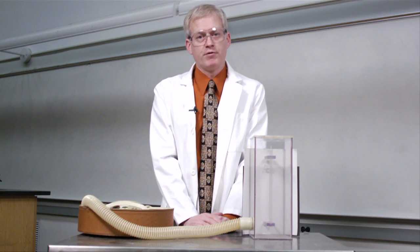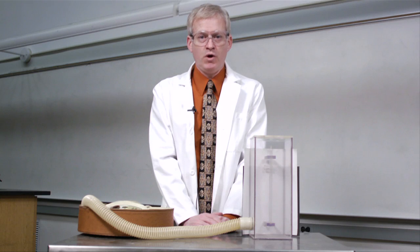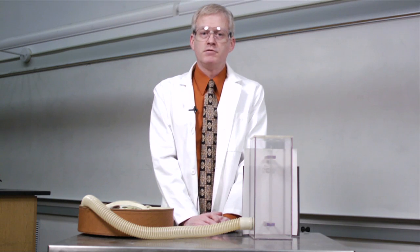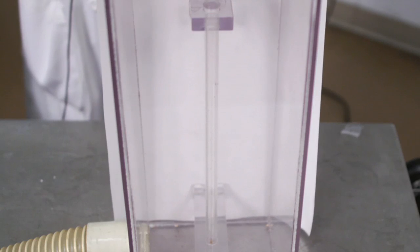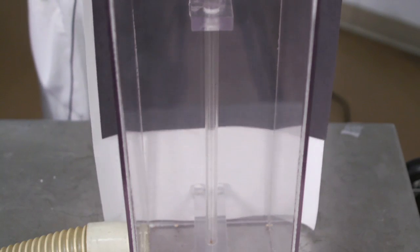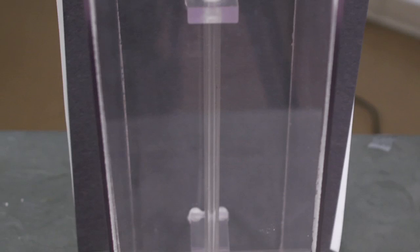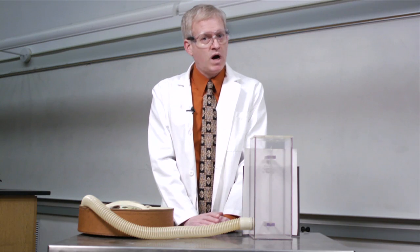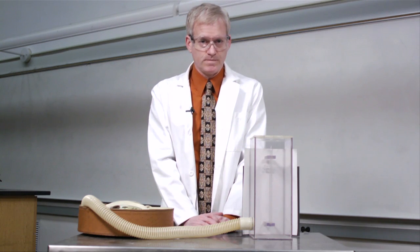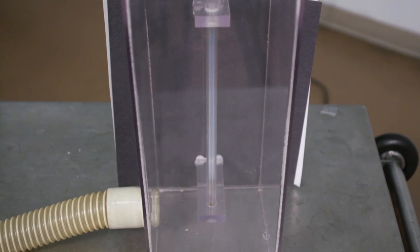An interesting thing about the critical point is that as it is approached from above in temperature, one often observes a phenomenon known as opalescence. The condensation of gas to liquid that occurs everywhere in the tube leads to very small suspended drops that scatter light beautifully until a new liquid phase is formed. Let's watch carefully as the tube cools.